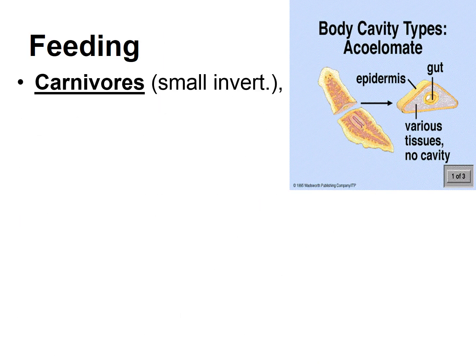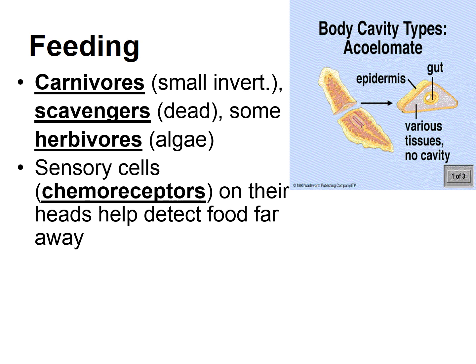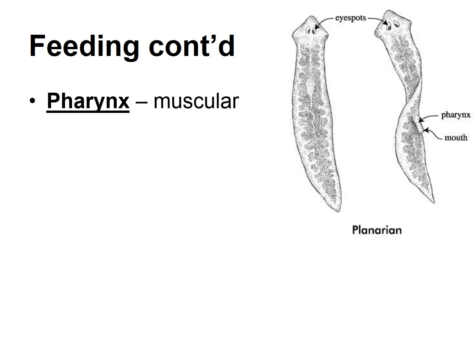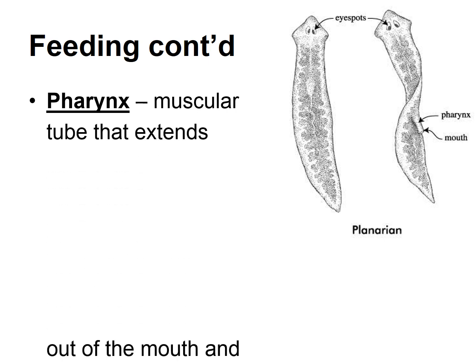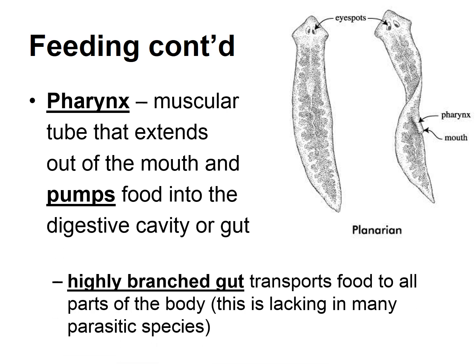They are carnivores — they'll eat small invertebrates, can scavenge on dead things, and some can be herbivorous and eat algae. They have sensory cells in their heads called chemoreceptors, meaning they detect chemical signals to help find food. They have a digestive cavity with a single opening, so food goes in and waste comes out the same area. Their pharynx is a muscular extension that helps pump food into their digestive cavity. They have a very highly branched gut that helps transport nutrients throughout their body, and then use diffusion to get those nutrients to their cells.